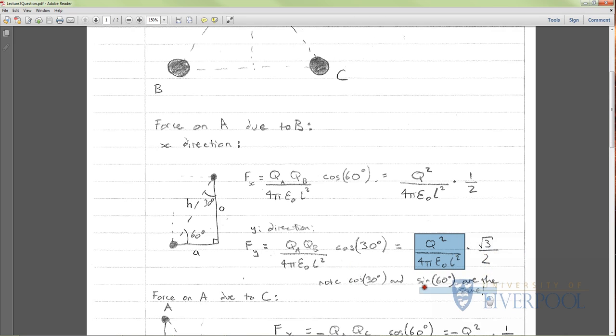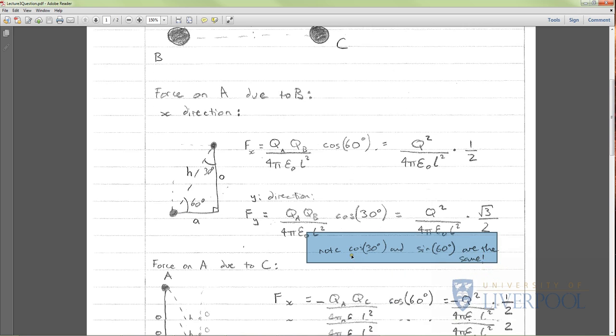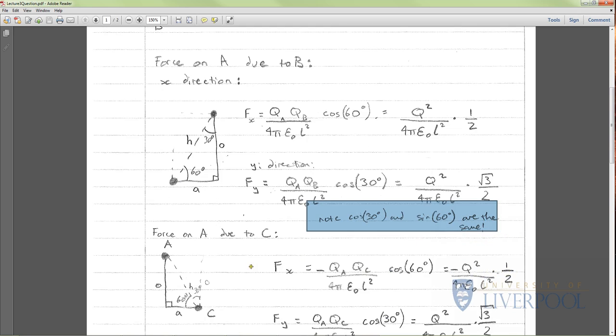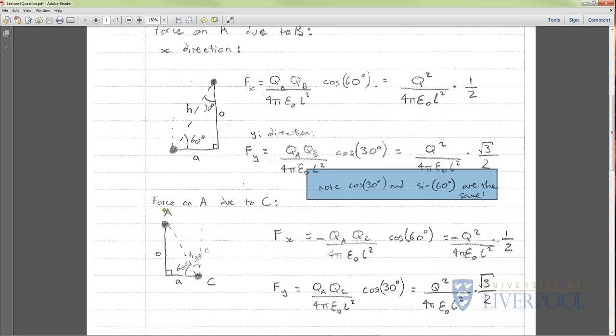You can calculate this using sine rather than cos, it just depends how you set up these triangles. You'll get the same answer because of the symmetry. That's half of the problem solved. Now we're going to look at the force on A due to C, the other half of that equilateral triangle. Here's A, here's C, we've got our hypotenuse length L as before.